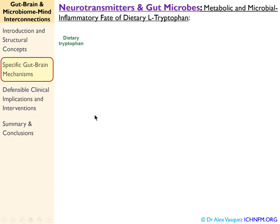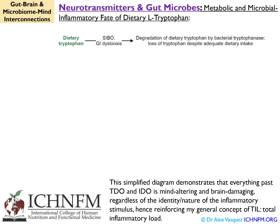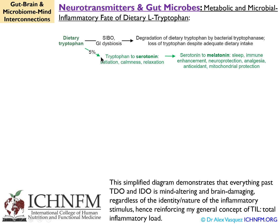Let me show you a pathway that will make all of this more clear. This is the simple version of the pathway — one of the diagrams I created to explain the fate of dietary tryptophan. People consume tryptophan in dairy products, turkey, and whey protein isolate. Some of that tryptophan gets degraded within the gut by the enzyme tryptophanase and converted into indole, which is mostly toxic. Approximately five percent of dietary tryptophan goes into the pathway to create serotonin and ultimately melatonin. This part of the pathway is actually rather slow, while this part of the pathway is very fast.